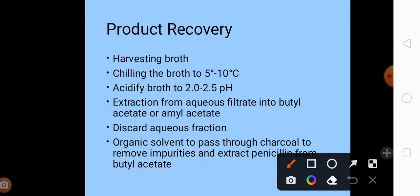Next we will be extracting this broth from our aqueous filtrate into butyl acetate or amyl acetate. At this low pH, we saw the pH is at around 2.5. As soon as it is possible, the broth has to be centrifuged in a counter current extractor. After centrifugation, the aqueous fraction will be discarded. The organic solvent that we got after centrifugation is passed through charcoal to remove any kind of impurities. Now we will extract penicillin from butyl acetate.